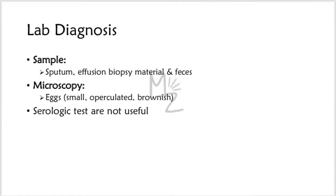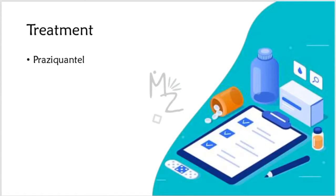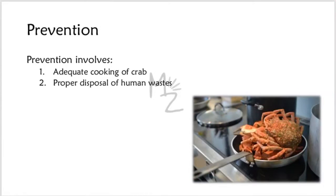Lab diagnosis: samples needed include sputum, feces, urine, and effusion biopsy material. Diagnosis is made by finding typical operculated eggs in sputum or feces under the microscope. Serologic tests are not useful. Treatment: praziquantel is the drug of choice. Prevention involves adequate cooking of crab or crayfish, and proper disposal of human wastes.